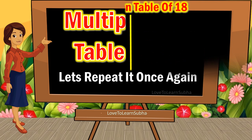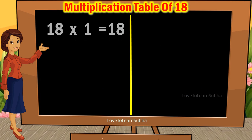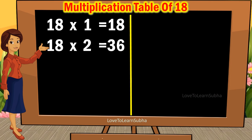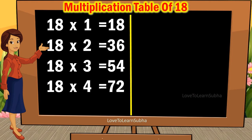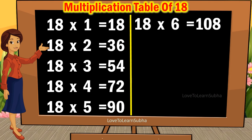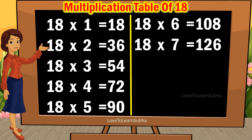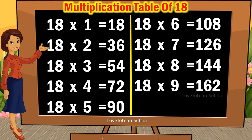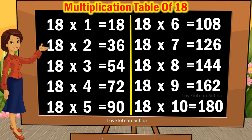18 1's are 18, 18 2's are 36, 18 3's are 54, 18 4's are 72, 18 5's are 19, 18 6's are 108, 18 7's are 126, 18 8's are 144, 18 9's are 162, 18 10's are 180.